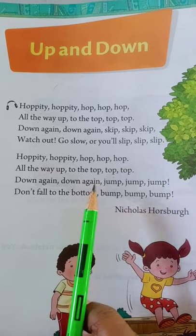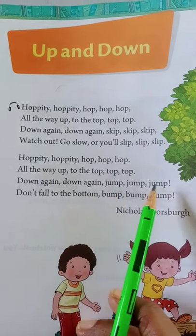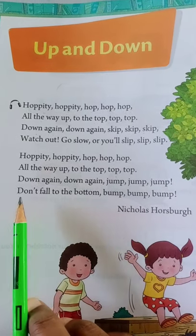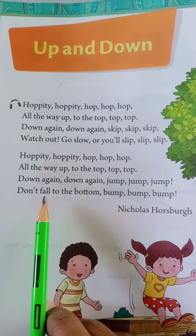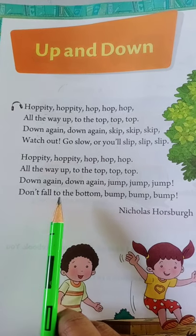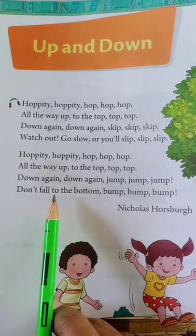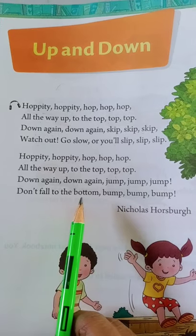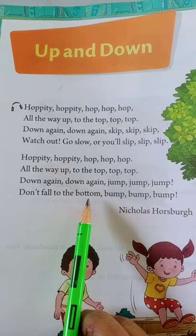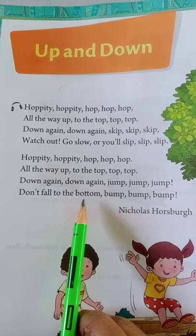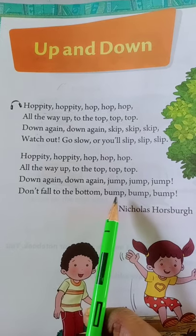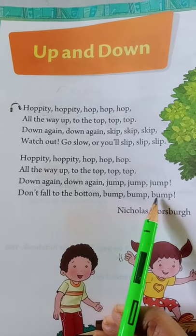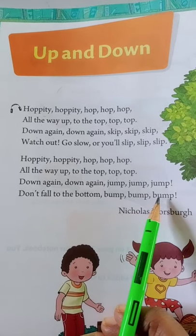Down again, down again. Jump, jump, jump. D, O, N, T — Don't. F, A, L, L — Fall. T, O — To. T, H, E — The. B, O, T, T, O, M — Bottom. B, U, M, P — Bump. B, U, M, P — Bump. B, U, M, P — Bump.